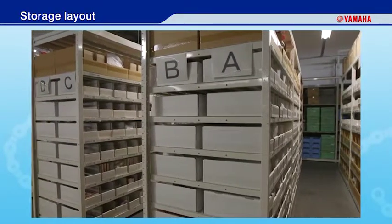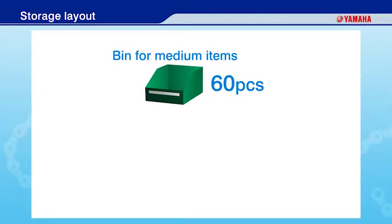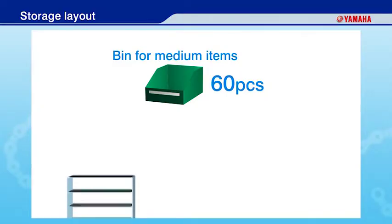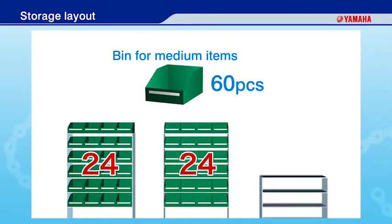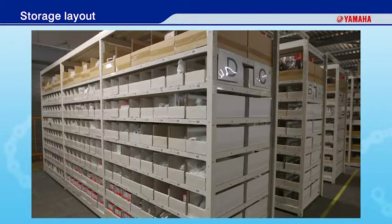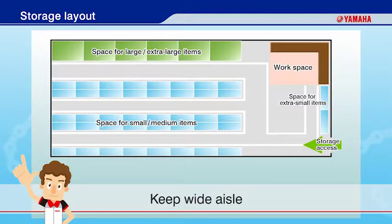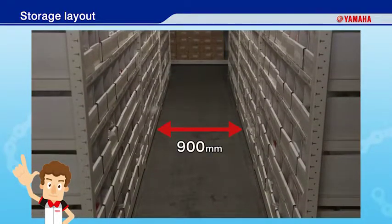Next, calculate the number of racks you need. For example, you can maintain 24 locations in a single rack for medium-sized bins. If you need 60 medium bins, you'll need three racks. Determine your layout based on the number of required racks you calculated. Let's go over some important points when determining your layout. First, you need to keep workability in mind when determining aisle width in your parts storage.